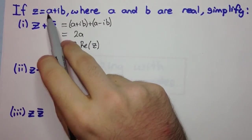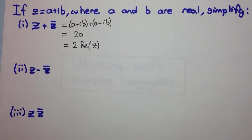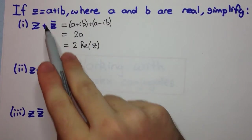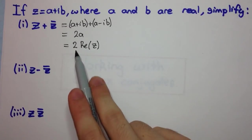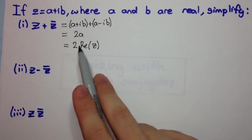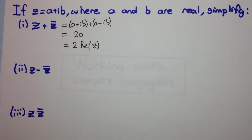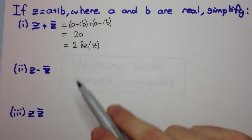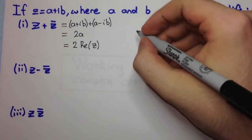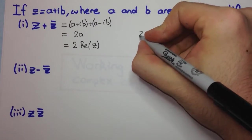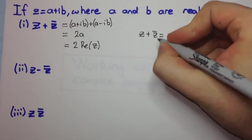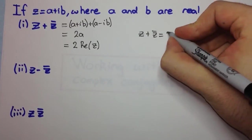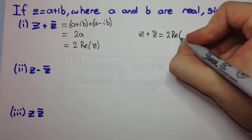Since z is a plus ib, the real part of z is a. So this is 2 times a, or we can think of it as 2 times the real part of z. The reason we think of it this way is so we can state in general that z plus z bar is equal to twice the real part of z.